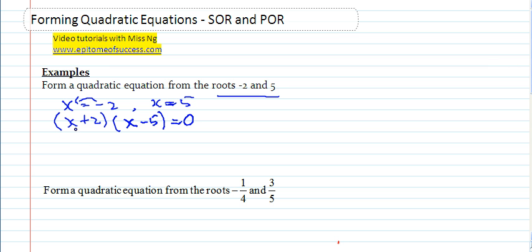Alright, and then what you do is you expand this. So that will be x squared minus 5x plus 2x minus 10 equals to 0. And you get x squared minus 3x minus 10 equals to 0. There you go, you have your equation.